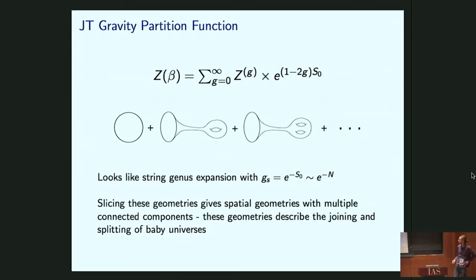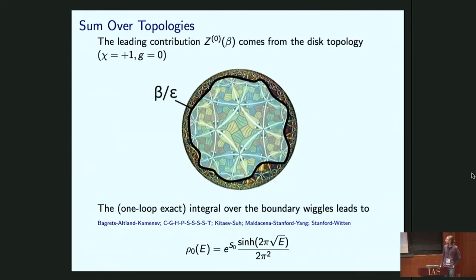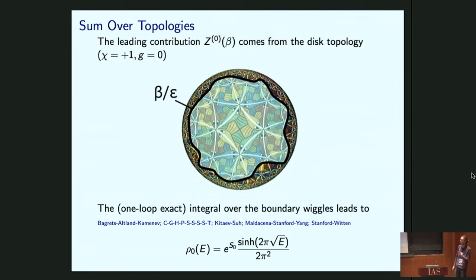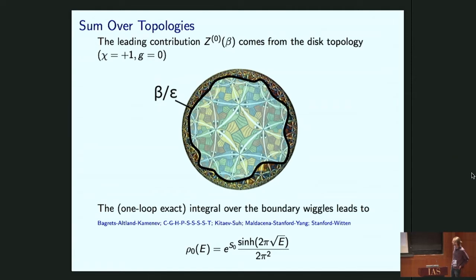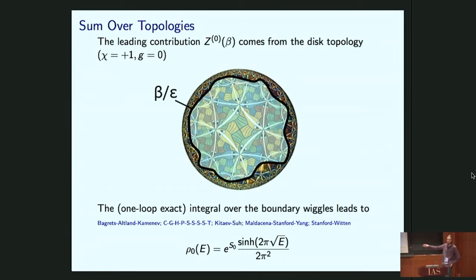Looking at the leading term, g=0, the disk topology: the topological term in the JT action gives Euler characteristic +1, weighting the contribution by e^{+S0}. The disk partition function has been studied extensively and is one-loop exact. Upon Laplace transforming, you get the genus-0 density of states with this sinh of sqrt(E) form. I want you to pay attention to this function sinh of sqrt(E) because it's going to be important.